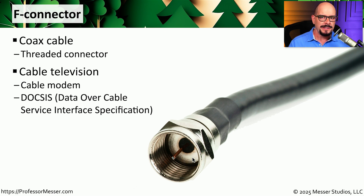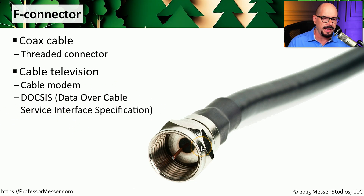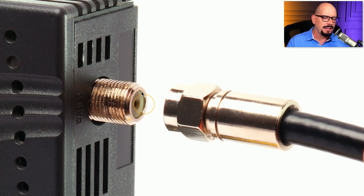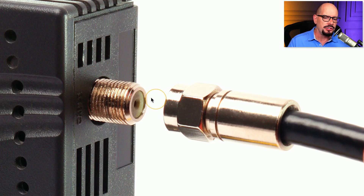If you look at the specifications for your cable modem, you'll see that it follows the standard of DOCSIS — Data Over Cable Service Interface Specification. That DOCSIS modem connects to the cable modem network using the F connector. Here's the connection on the back of a cable modem: you've got the female F connector on the modem itself, and this is the coax cable with an F connector on the end that you screw into that cable modem connection.